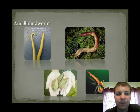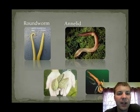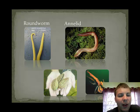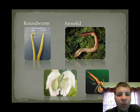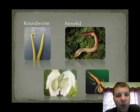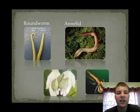The next group is the annelids, and the most common example is the earthworm. Compare the annelid picture — the earthworm — with that of the roundworm on the left. You'll notice that the annelid group has rings, and the roundworm has a smooth surface. One of the characteristics of annelids is that segmented appearance.